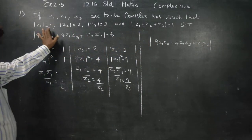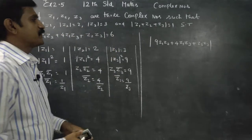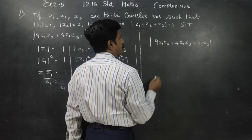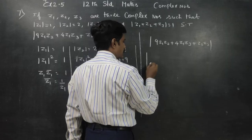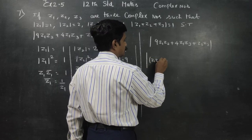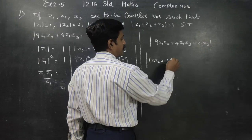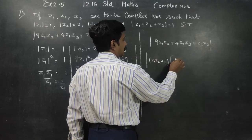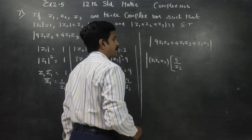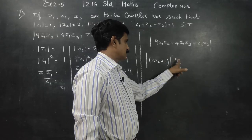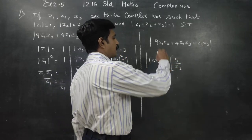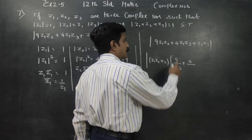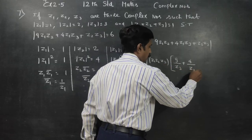Starting simplification: we take z1·z2·z3 as common factor. For the first term, z3 conjugate equals 9 by z3, so multiplying through, z3 and z3 cancel, giving z1·z2 equals 1 as the remaining factor. For the second term, taking z1·z3, with z2 conjugate equals 4 by z2, z2 cancels and z1·z3 remains.